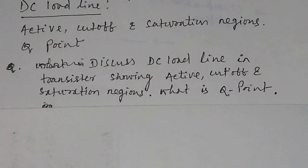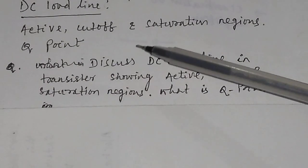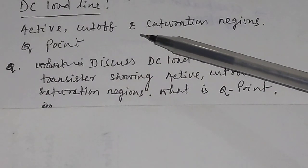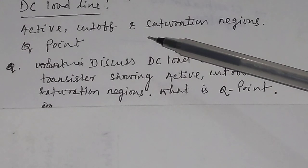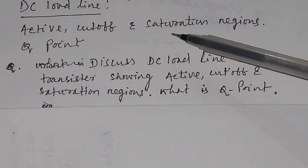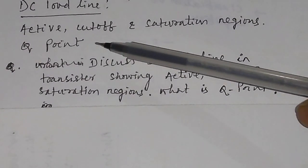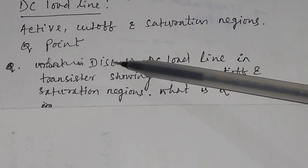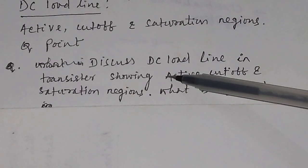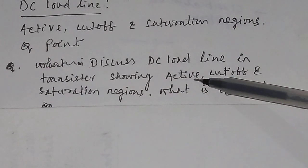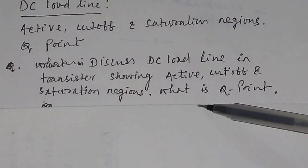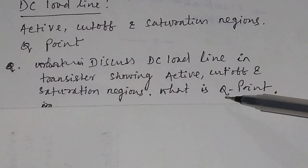In this video we will discuss about DC load line. First we will discuss what is cutoff point and what is saturation point, then we will discuss about the saturation region, then the active region, and then we will discuss about the Q point. The question will come like this: discuss DC load line in a transistor showing active, cutoff, and saturation regions, and what is Q point.